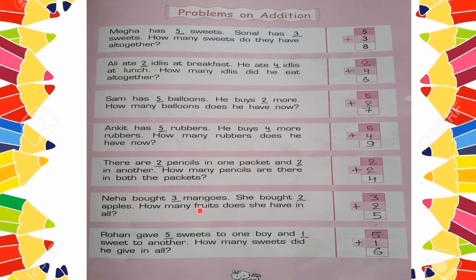Next: Neha bought 3 mangoes and 2 apples. How many fruits does she have in all? Write 3 for mangoes, then write 2 for apples, and add them. 3 plus 2: counting 4, 5. So 3 plus 2 is equal to 5. She has 5 fruits in total.